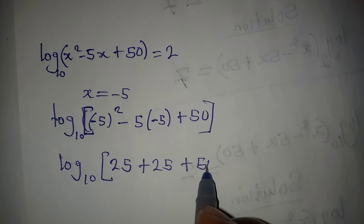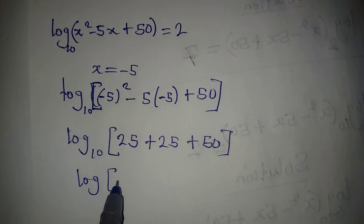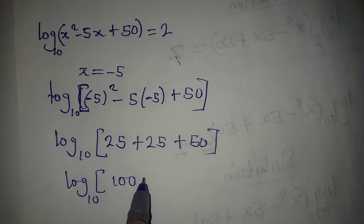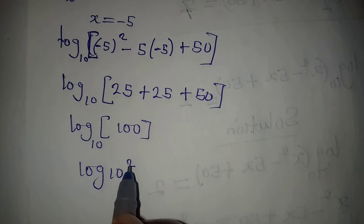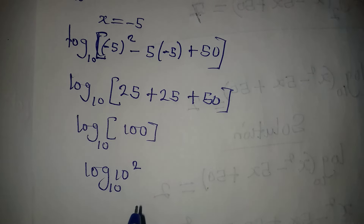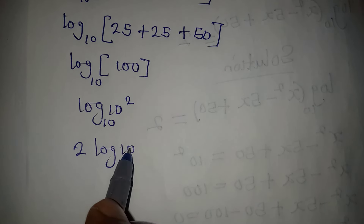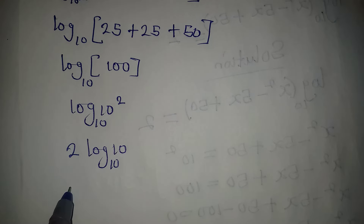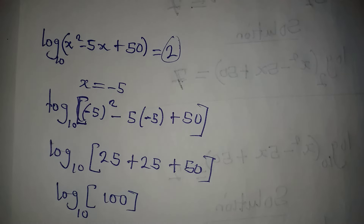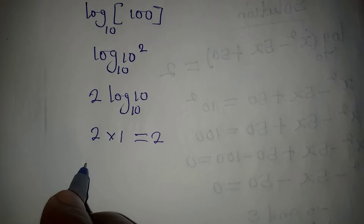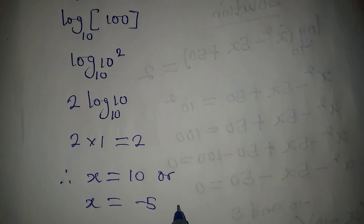So we have log base 10 of 100, which equals log base 10 of 10². The power comes down: 2·log₁₀(10). Since log of a number to its own base equals 1, this gives 2 × 1 = 2, which matches the right-hand side. So x = -5 is also correct. Therefore x = 10 or x = -5. Thank you for watching.